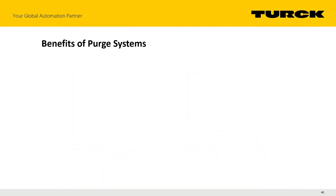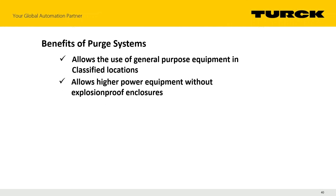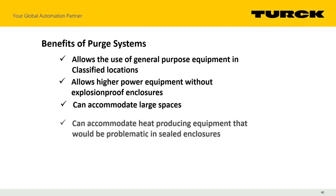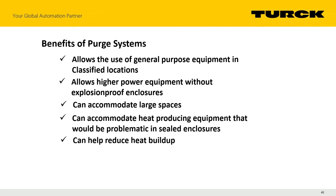Benefits of purge systems: they allow general-purpose equipment in classified locations (at least for Type X and Z), allow higher-power equipment without explosion-proof enclosures, and can accommodate large spaces. Importantly, they can accommodate heat-producing equipment that would be a real problem in sealed explosion-proof enclosures. Constant-flow purge systems also help reduce heat buildup due to the airflow.